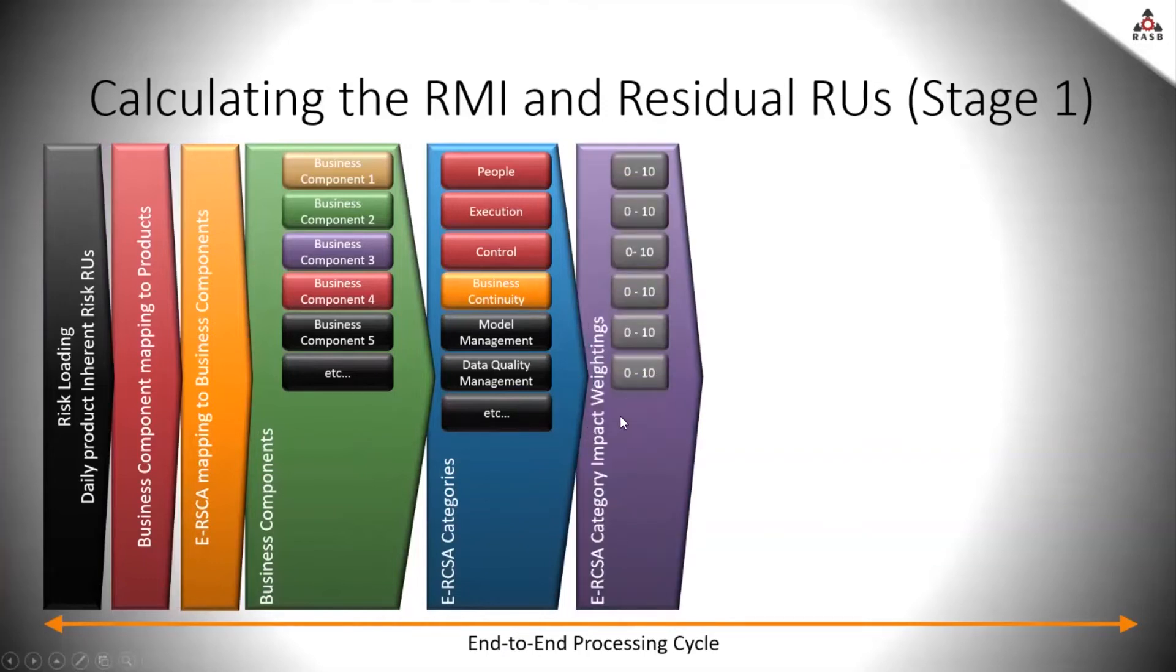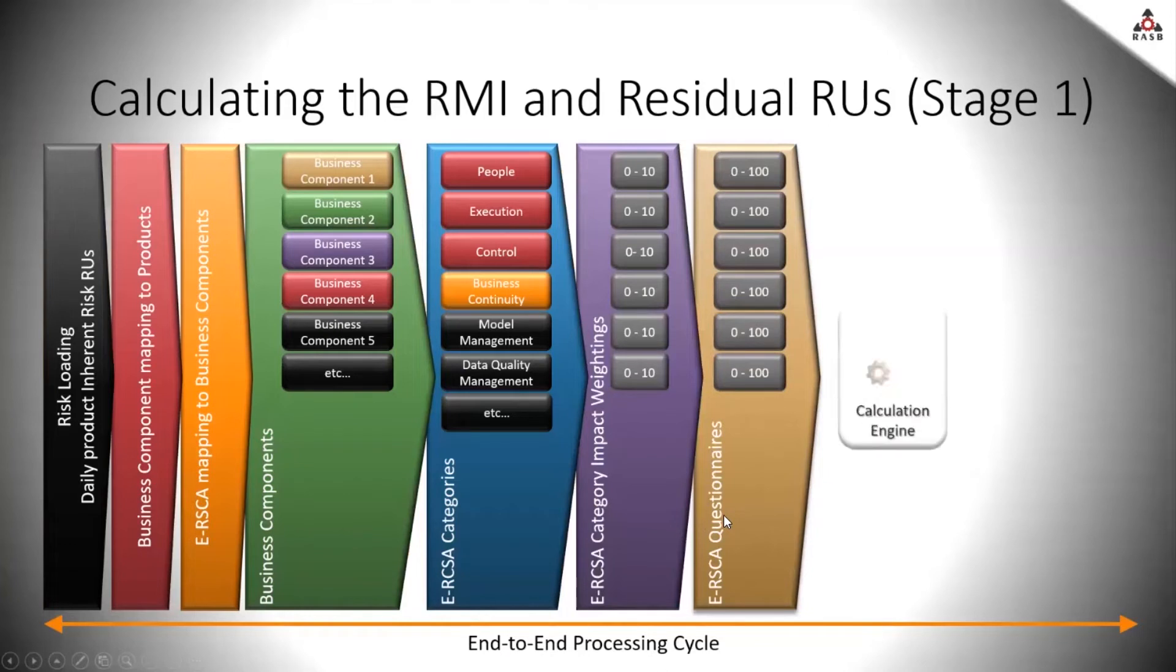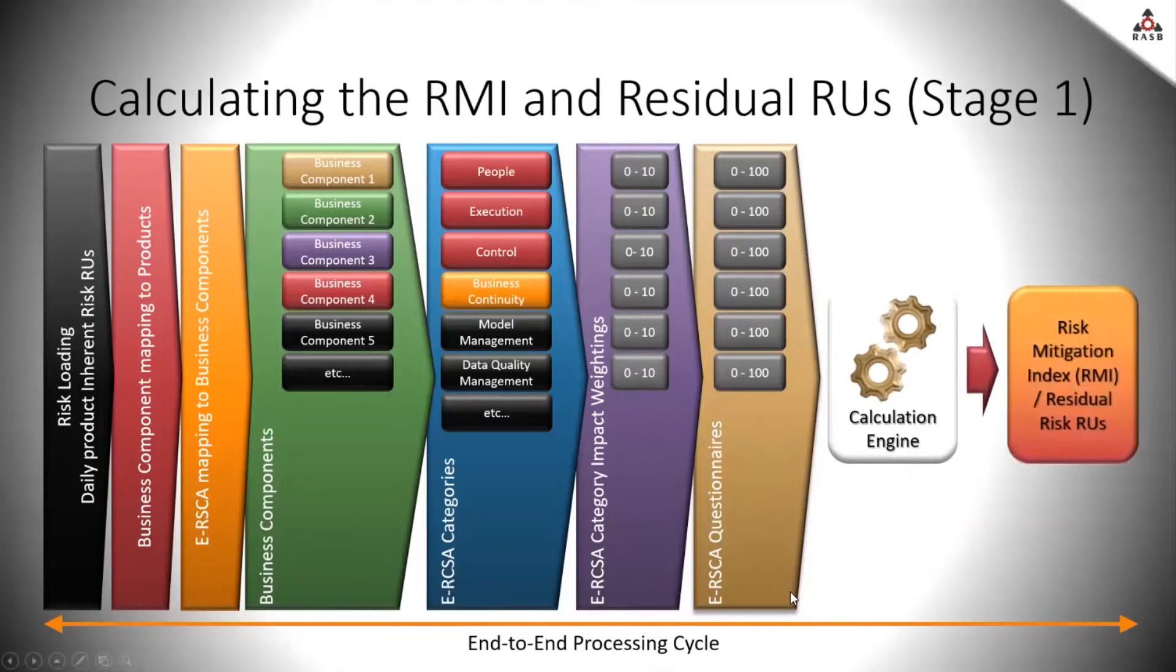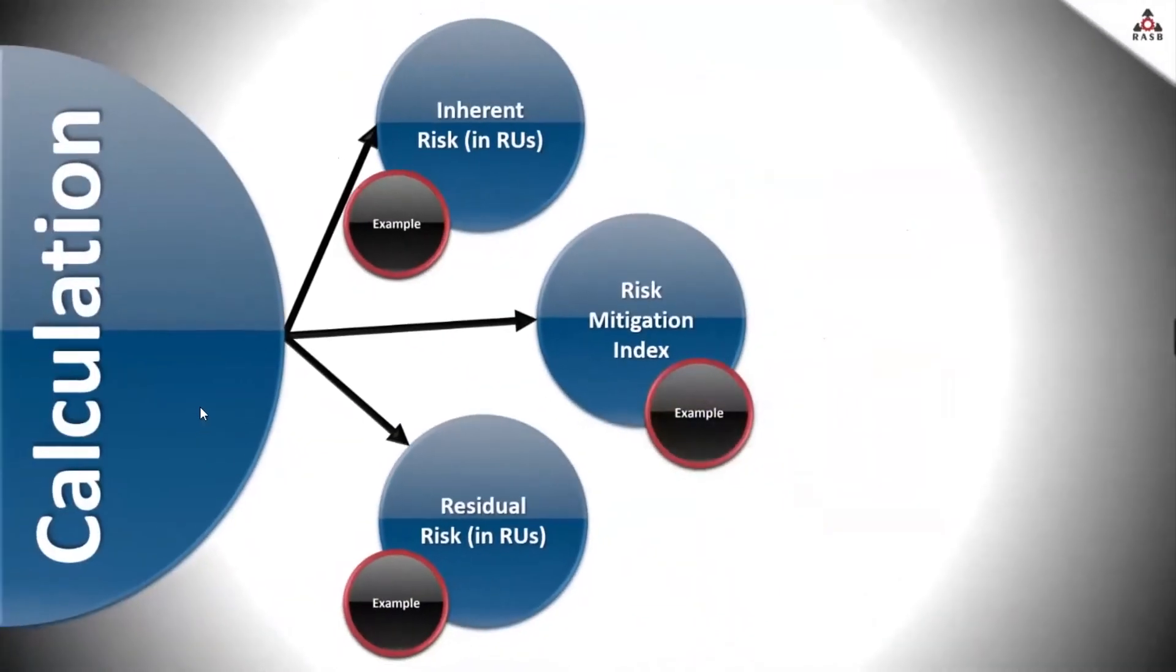Then we have weightings assigned to each enhanced risk and control self-assessment categories. And from here, there results the ERCSA questionnaires, the enhanced risk and control self-assessment questionnaires, which basically take in information out of the operational processes. They all flow into the calculation engine and they result in the risk mitigation index, which contributes to the calculation of the residual risk or RUs.